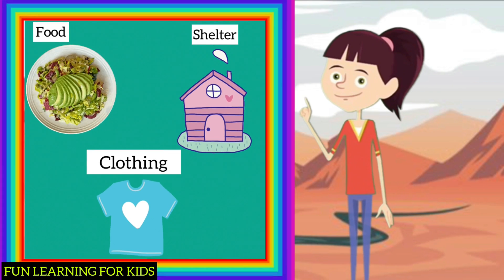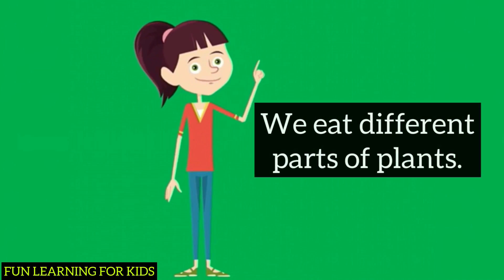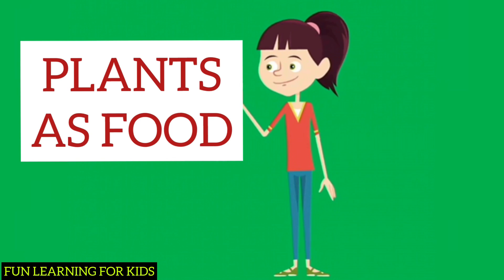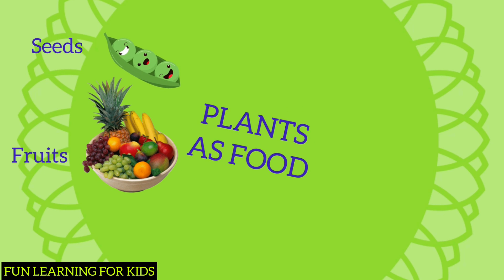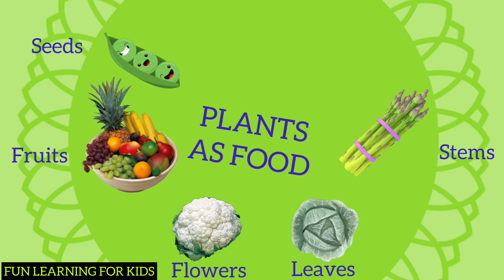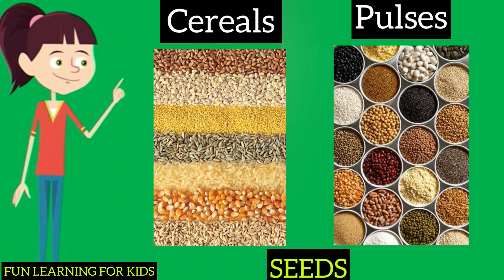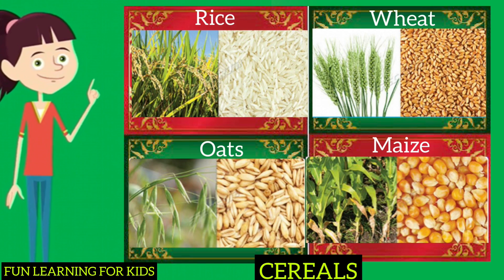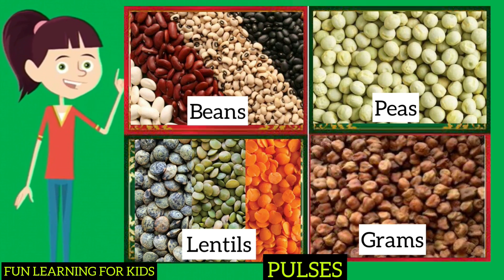Like food, shelter, and clothing. Isn't it hard to believe? We eat different parts of plants — take a look at this. Plants as food: we eat seeds, fruits, flowers, leaves, stems, and roots of different plants. Cereals and pulses are seeds. Rice, wheat, oats, and maize are cereals.